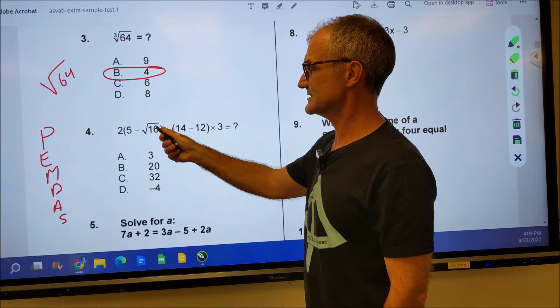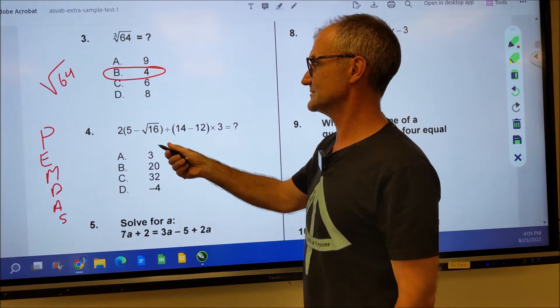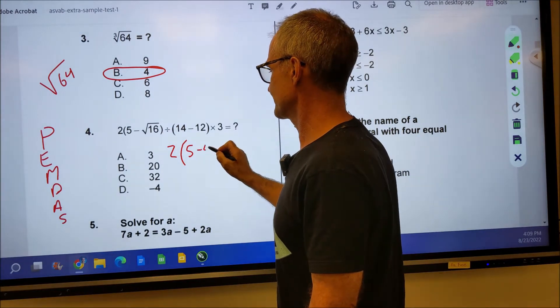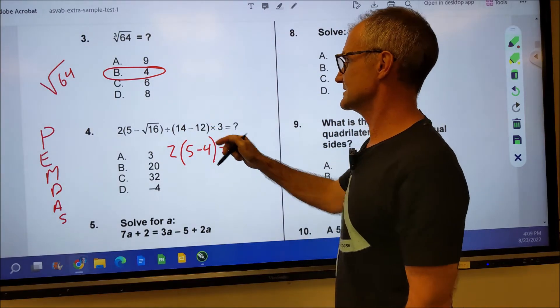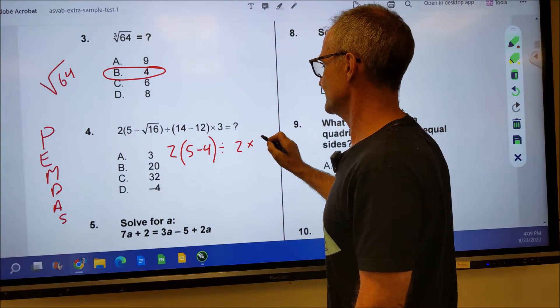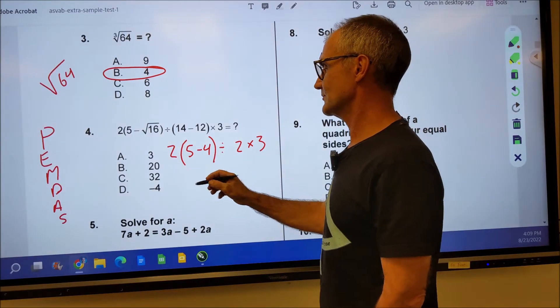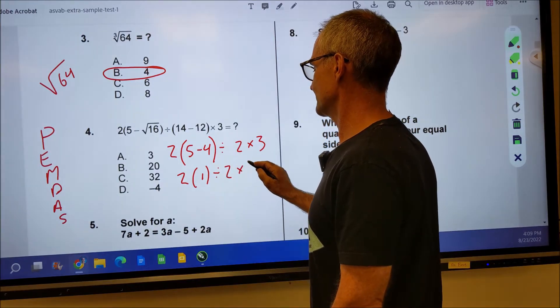So square root of 16 is four, right? We said square root is something times itself equals that number. So I have 2 times 5 minus 4 divided by 14 minus 12. That's a 2 times a 3. And I still have to do these parentheses. 5 minus 4 is 1. So I have 2 times 1 divided by 2 times 3.